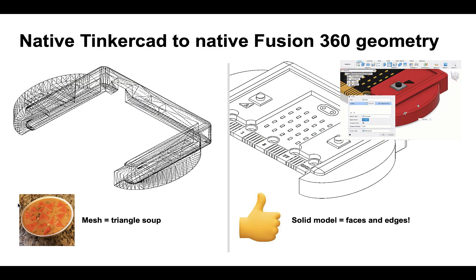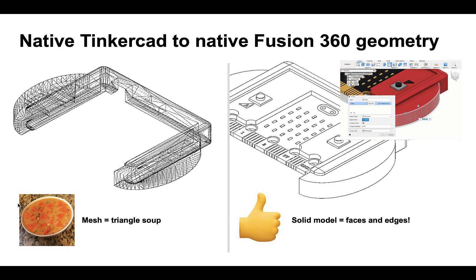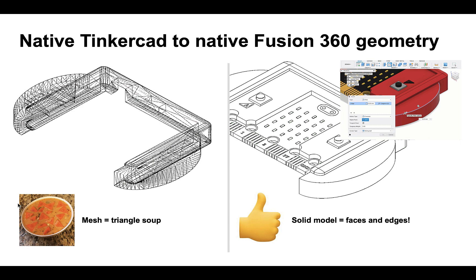Let's go over some best practices for starting a design in Tinkercad and turning it into native Fusion 360 geometry. This is what an imported mesh would look like in Fusion 360 or any mechanical software — the image on the left. This is essentially a triangle soup, which means that the only information stored is the shape and location of all the triangles needed to represent the object. There are no curves, just a bunch of very small planar facets that give the illusion of a curve.